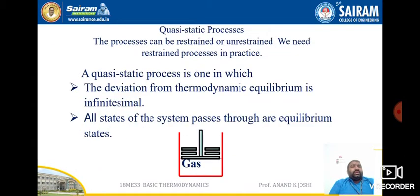Next is the quasi-static process. A quasi-static process is one in which the deviation from thermodynamic equilibrium is infinitesimally small, so all states of the system pass through equilibrium states. To understand this, suppose you take a piston-cylinder arrangement loaded with different weights.